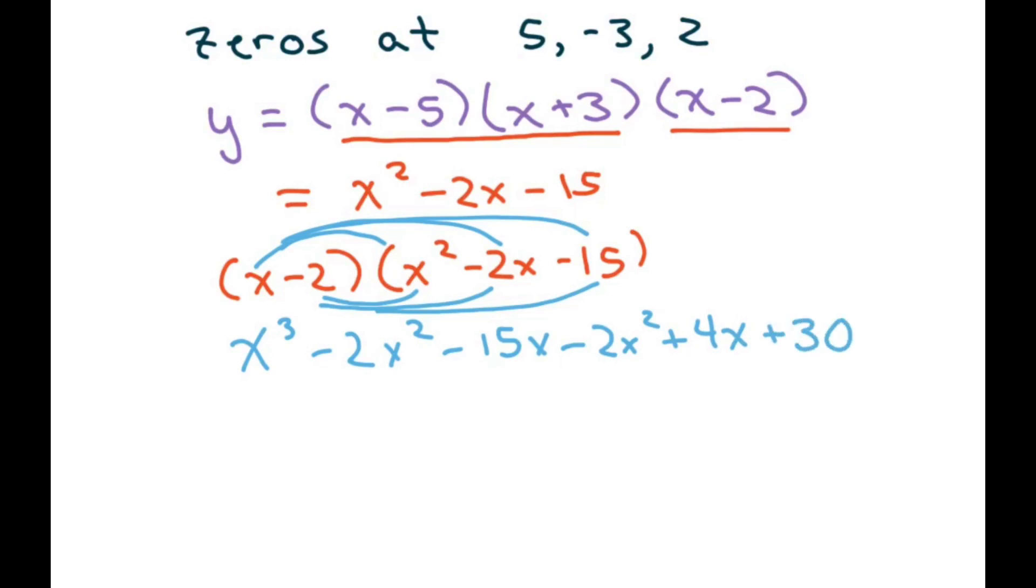Now, simplifying, we only have 1x cubed. We have two of these. So there's negative 2 minus 2, so that's negative 4x squared. Negative 15x plus 4x is negative 11x. And then we have plus 30. And that would be your standard form here.